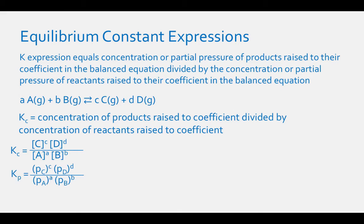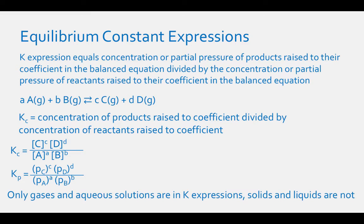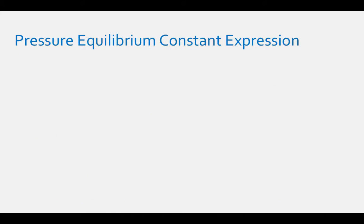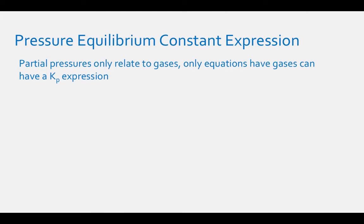Kp equals the partial pressure of C raised to the power c times the partial pressure of D raised to the power d, divided by the partial pressure of A raised to the power a times the partial pressure of B raised to the power b. Remember, only gases and aqueous solutions appear in equilibrium constant expressions — pure solids and liquids do not. Partial pressures only relate to gases, so only equations that have gases can have a Kp expression.